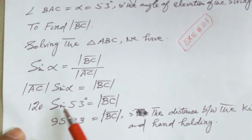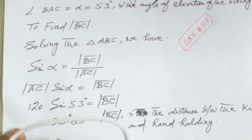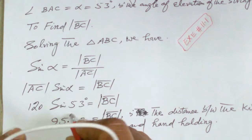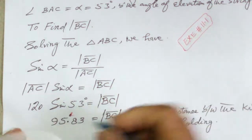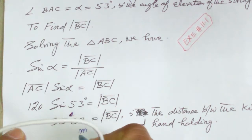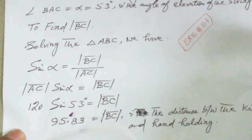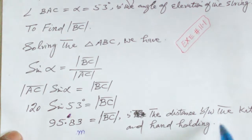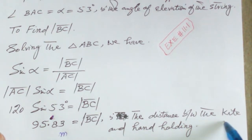After simplification, we have 95.83 meters. BC is the distance between the kite and the hand holding.